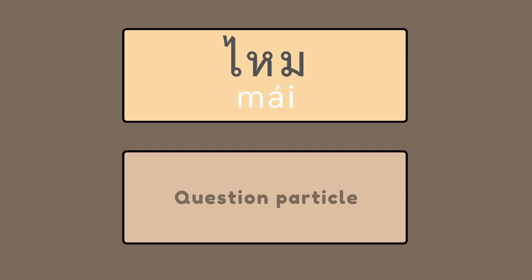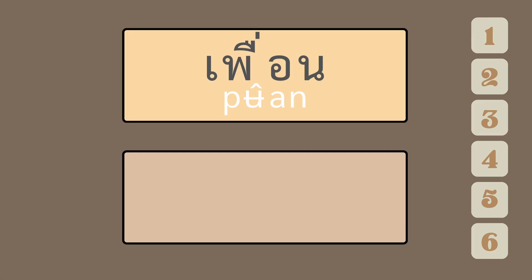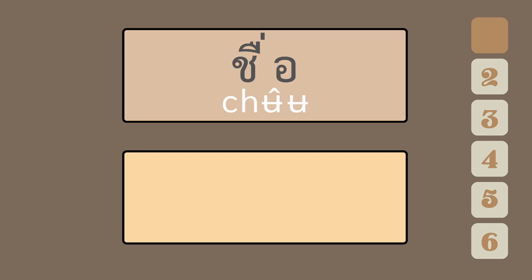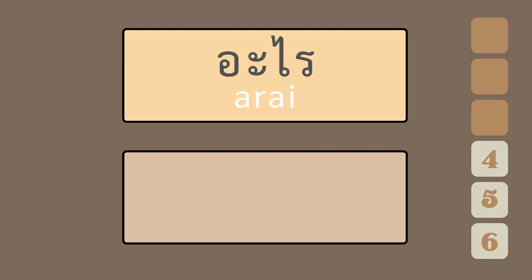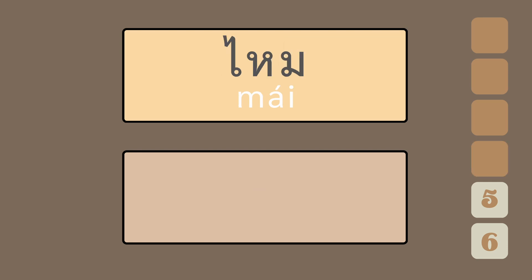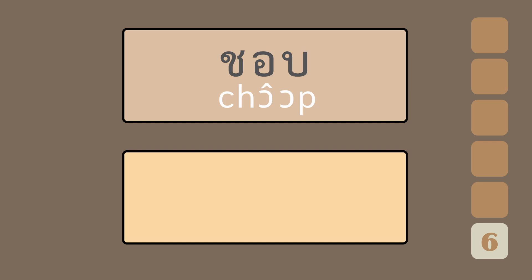Now, let's do the quiz. What is เพื่อน? What is ชื่อ? What is มาก — a lot, very much. What is อะไร? What is ไหม — question particle. What is ชอบ? — To like.